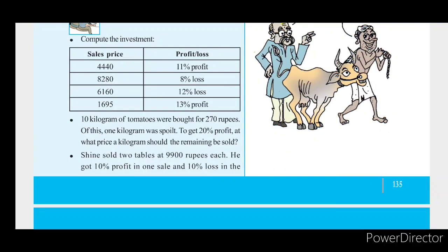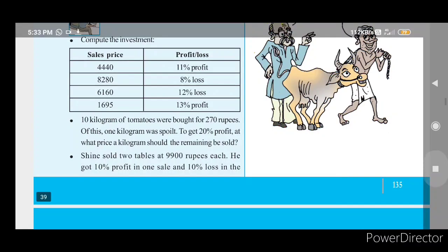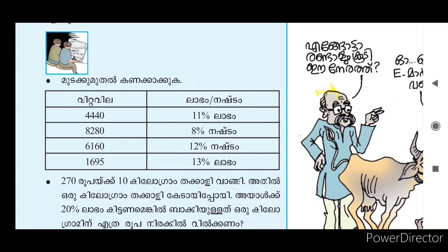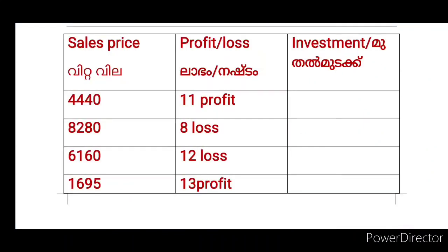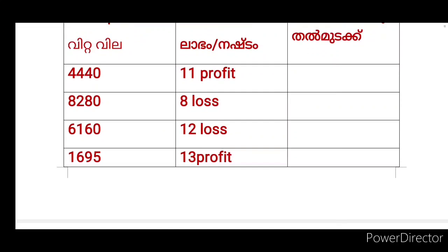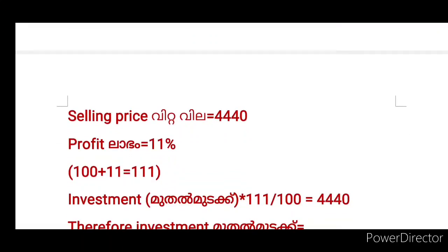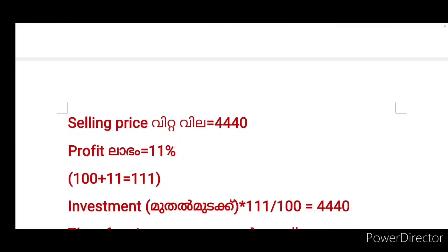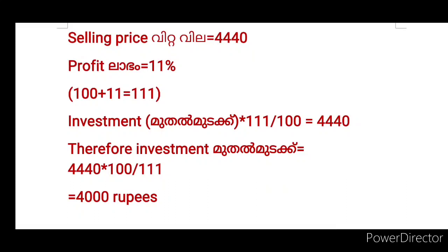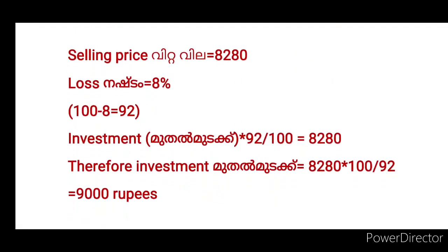This is to compute the investment. In the case of the sales price and profit, we are going to get the selling price, and now we are going to get the investment. In the case of the sales price, we are going to get the profit of 440. The sales price is 3,440, and the selling price is 1,440. The new price is the selling price at 3,440, not 3,540 — it is $4,460. The investment is $4,440.